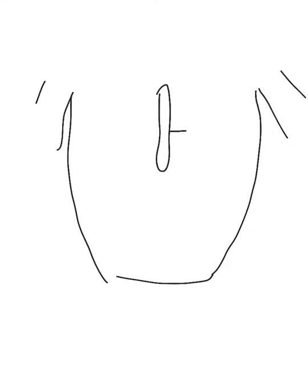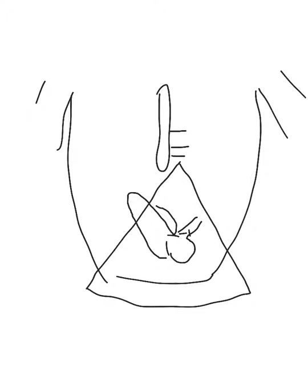If you start getting too low on the sternum - let's say the fourth, fifth, even as low as the sixth intercostal space - you're going to start to see an image with the mitral valve here, the left atrium, and the aorta kind of sticking up here. You'll see a bit of the RV, and this will be the way the image looks on the echo machine. That is probably more frustrating to a cardiologist than anything. So avoid this image as much as you possibly can.